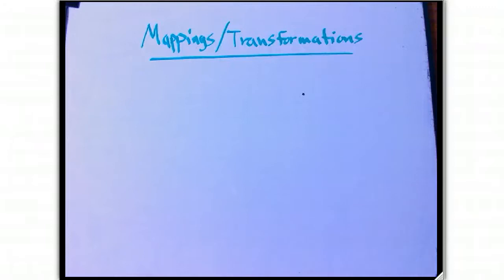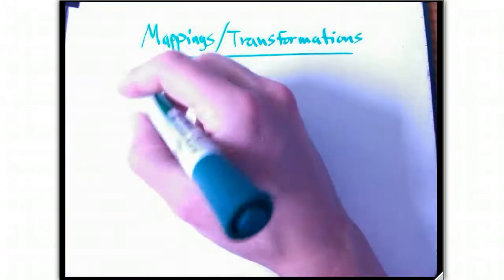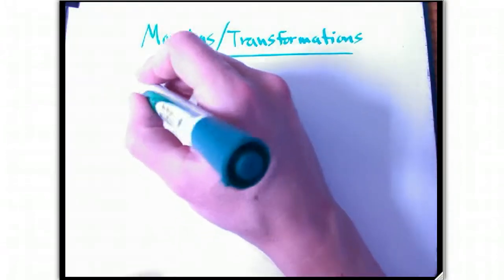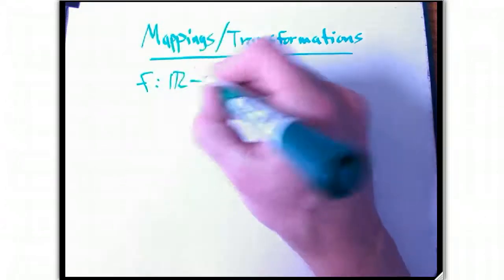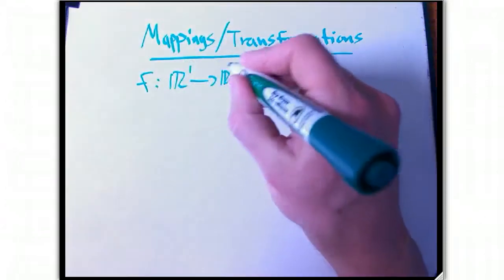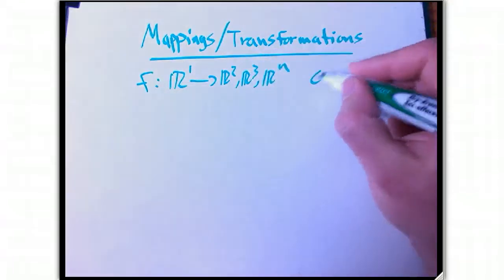Let's talk about mappings or transformations. The setting here is that we've already thought a fair amount about a function. One kind of function was from R1 to R2 or R3 or even Rn, and that's a curve.